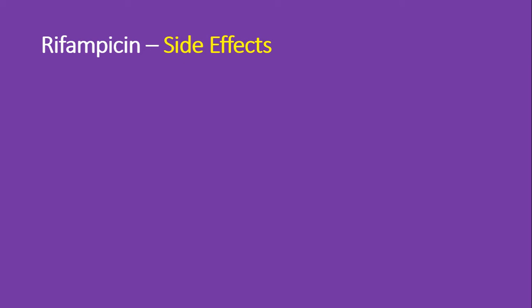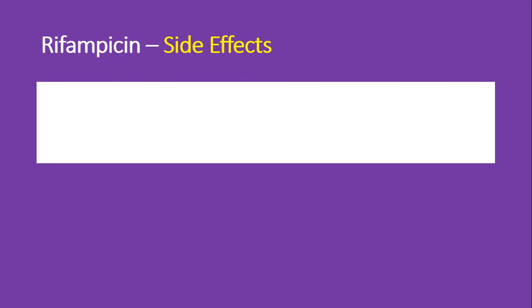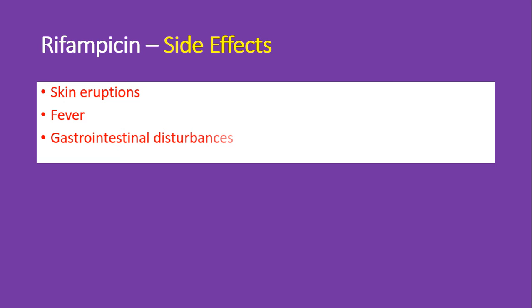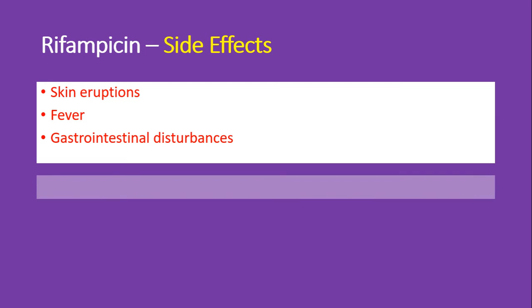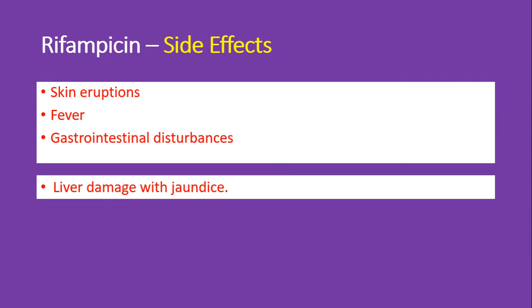Coming to the side effects caused by rifampicin: commonly it causes flu-like symptoms such as skin eruptions, fever, and gastrointestinal disturbances. Apart from this, rifampicin can also cause liver damage with jaundice. That is why before administering rifampicin you need to check for any liver dysfunction by doing a liver function test.